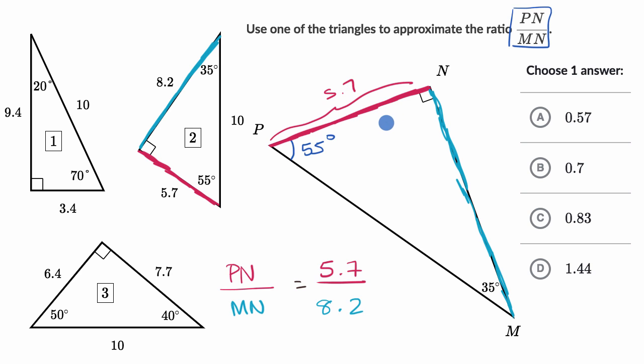But with similarity, we know that the ratios, if we look at the ratio of the red side to the blue side on each of those triangles, that would be the same. And so this gives us that ratio.